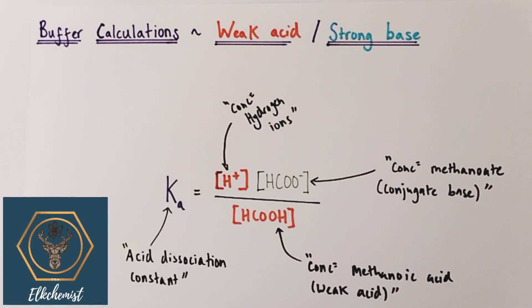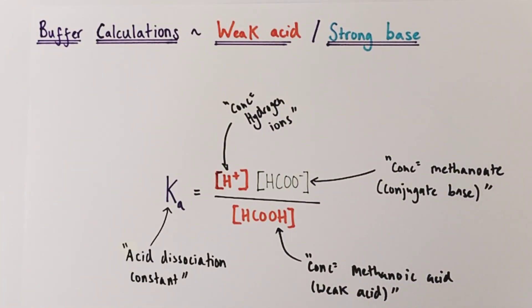Hi there, welcome to this Alchemist Chemistry A-Level video looking at buffer calculations. These particular buffer calculations will involve adding strong bases to weak acids to generate those buffer solutions in situ, rather than adding a salt to a weak acid. This is a different type of buffer calculation, but still vitally important to understand. I'll take you through the theory and then through the calculation itself.